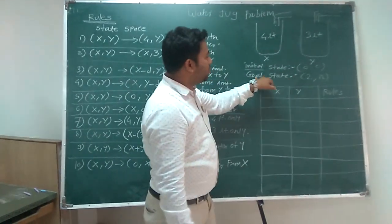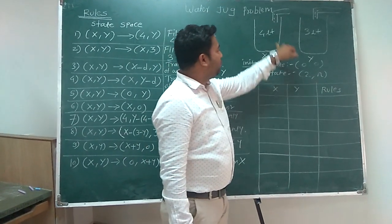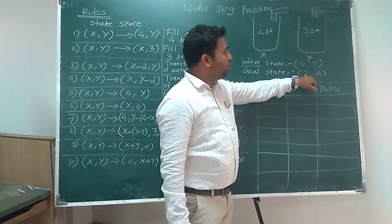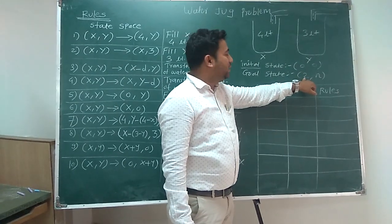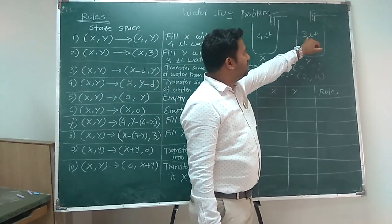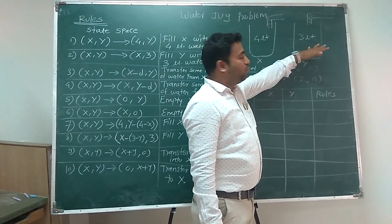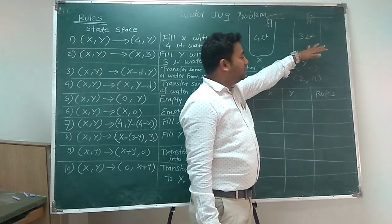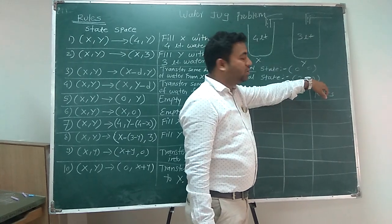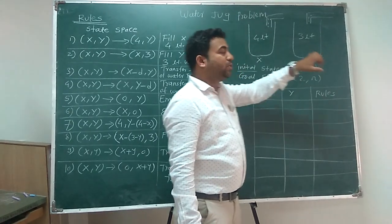This is our goal state. In the 4-litre jug, we want exactly 2 litres of water. In the 3-litre jug, we do not know what is the exact amount. That is why we have written N here.